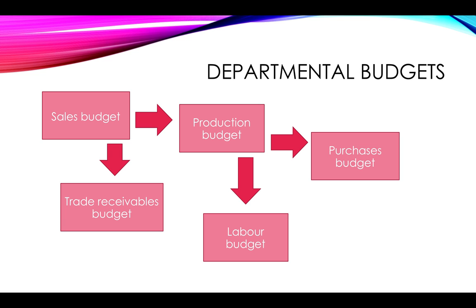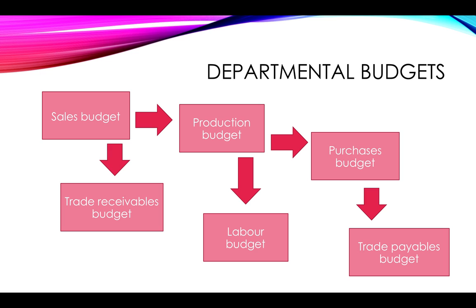Your purchases budget will be for raw materials, if you are going to put items into production, as well as if you are going to simply resell products, how many products you need to buy. In both cases, it will be drawn up very similarly to the production budget — in other words, taking into account expected inventory at the beginning and end of the period, as you have planned. From the purchases budget, you can then also determine your trade payables budget — in other words, how much and when you have to pay your suppliers for the items that you are planning to purchase from them.